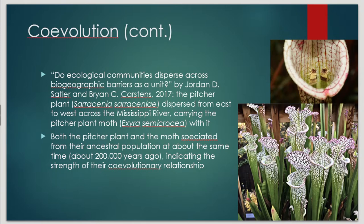Once you establish co-evolution, as one group involved starts to speciate, the other side of that symbiotic relationship is going to have to adapt to the new situation, and so they're going to probably end up speciating too. It's one of those things where when you think about it, you realize — oh, it kind of has to be that way.